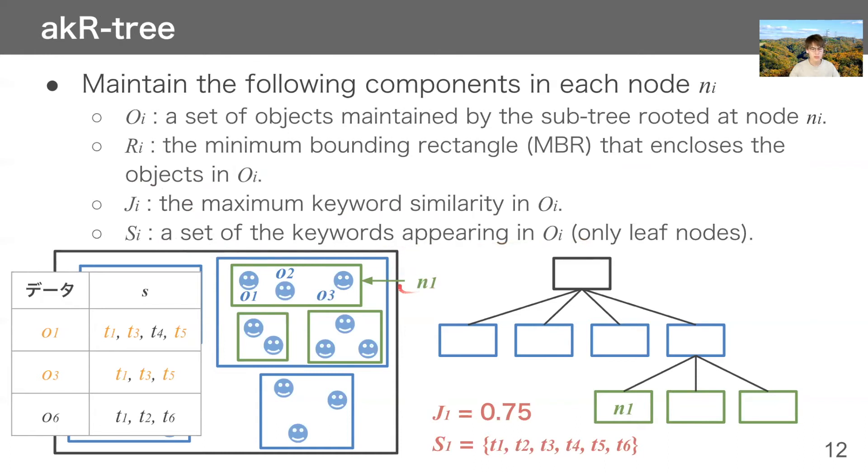In this example, node N1 maintains O1, O2, and O3. So R1 is this rectangle. The keyword sets of them is like this. And the most similar pairs in terms of keywords is O1 and O3. And the keyword similarity is 3 divided by 4, 0.75. So we set Ji to 0.75. Finally, S1 is union of them. So D1, D2, D3, D4, D5, and D6.